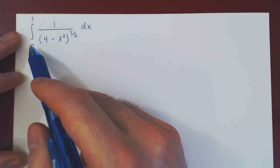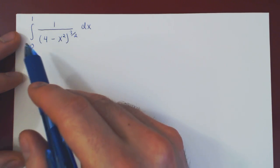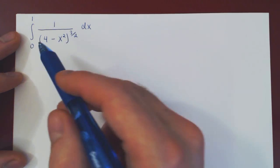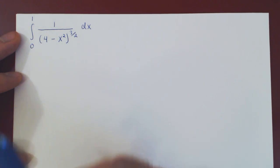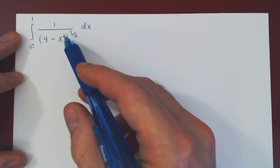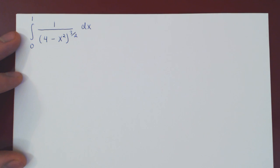And as it turns out, definite integrals, when making a trigonometric substitution, are simpler, as once we go in terms of theta, we will also change the bounds of integration, and we will not have to go back in terms of x, and this will save us a bit of work.